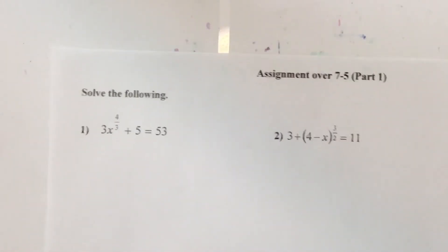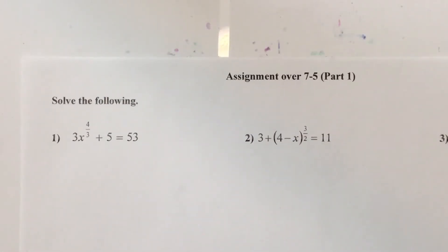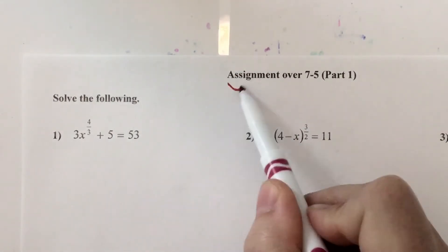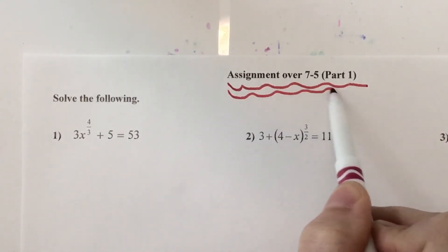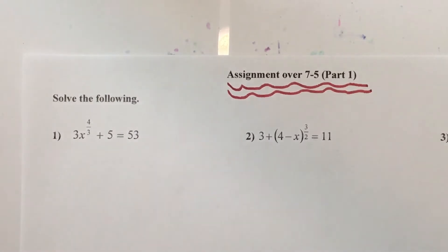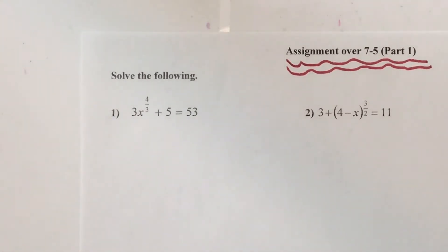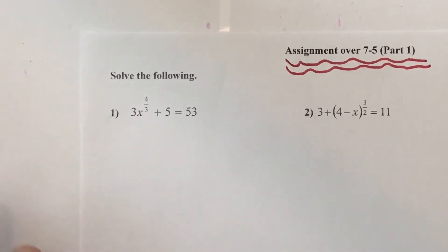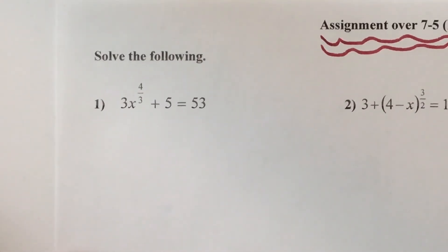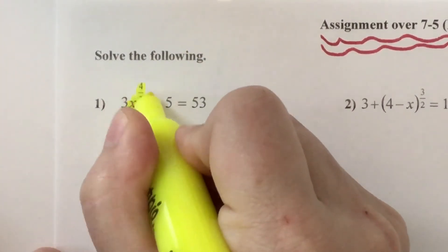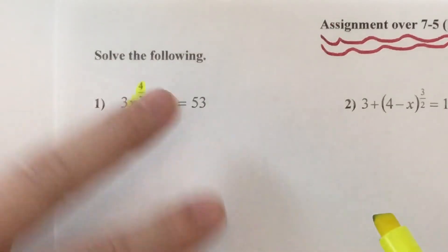Today I'm just doing more of the same thing. This is called assignment 7-5, part 1 — more of what I did yesterday. Now, number 1 looks different because there's no parentheses, which is why I wanted to do this for you. So in this problem with no parentheses, it's the x with the fraction exponent I need to get by itself before I can do the reciprocal.